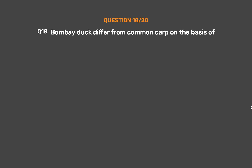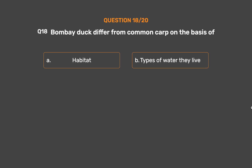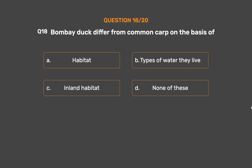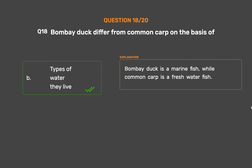Question No. 18. Bombay duck differs from common carp on the basis of — Option A: Habitat. Option B: Types of water they live in. Option C: Inland habitat. Option D: None of these. The correct answer is Option B: Types of water they live in. Bombay duck is a marine fish, while common carp is a freshwater fish.